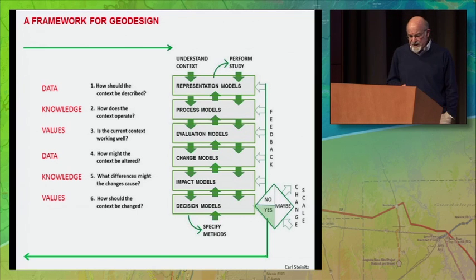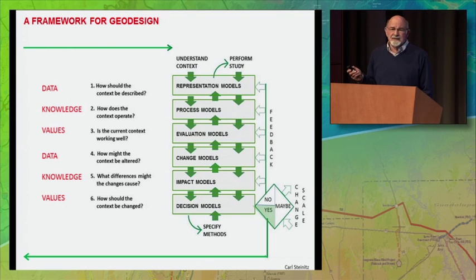The third question, is the current context working well? These are evaluation models, and they depend on the values of the people of the place. And those vary by culture, geography, time, attitude, social class, and all kinds of reasons. And political consensus is one of the objectives.